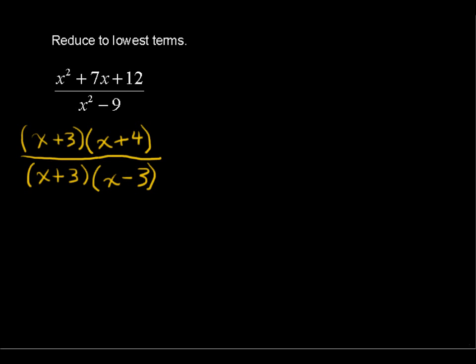And look, we've got some common factors that we can cancel out. We can divide the numerator by x plus 3 and the denominator by x plus 3. So what's left is x plus 4 over x minus 3.